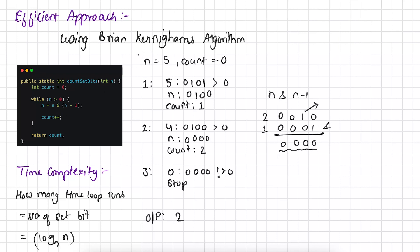Let's dry run this code with n equal to 5. Initial count is 0. In the first iteration, n is 0101. We do n = n AND (n-1), which unsets the rightmost set bit of 5, so n becomes 0100, and we increment count to 1. In the next iteration, n is 0100. We apply the algorithm again — n becomes 0000, and we increment count to 2. In the next iteration n is 0, so we exit the loop. In only 2 iterations we get output 2, because there are exactly 2 set bits in 5.